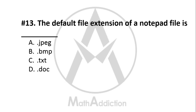Question No. 13: The default file extension of a Notepad file is — what? Option A: .jpeg, Option B: .bmp, Option C: .txt, Option D: .doc. The right answer is Option C — .txt (text file). Notepad can only create and save text files.